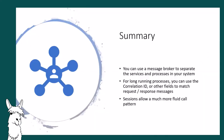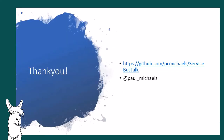In summary: you can use a message broker to separate services, processes, and machines. You can use correlation IDs for longer-running processes to implement a request-response pattern, and with sessions you can almost replace a traditional API request-response pattern via service bus. Thanks for listening — the code is at the GitHub repository, and if you want to speak to me outside of this meeting you can find me on Twitter.